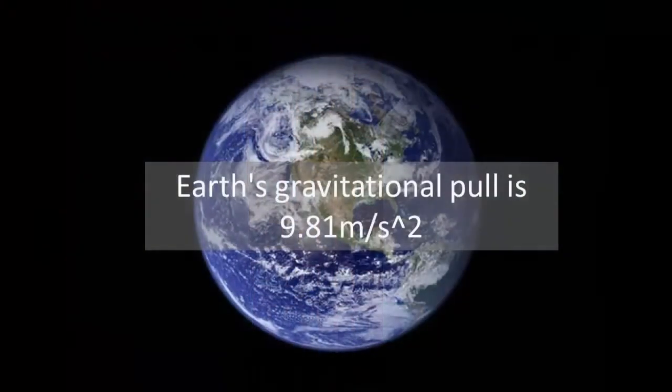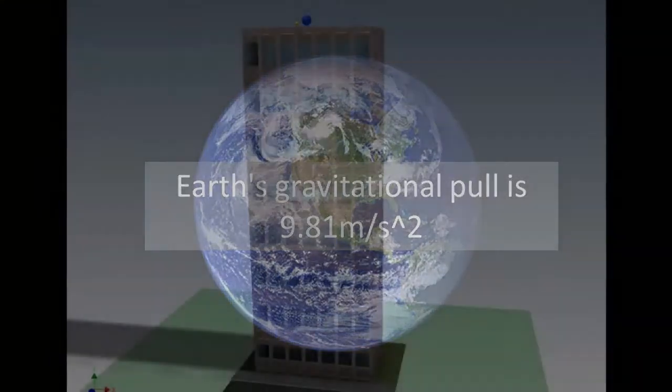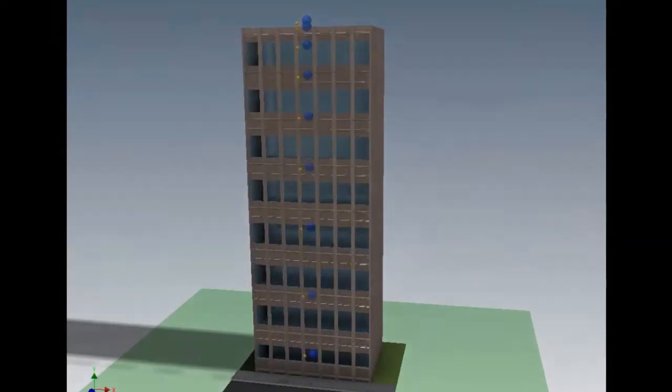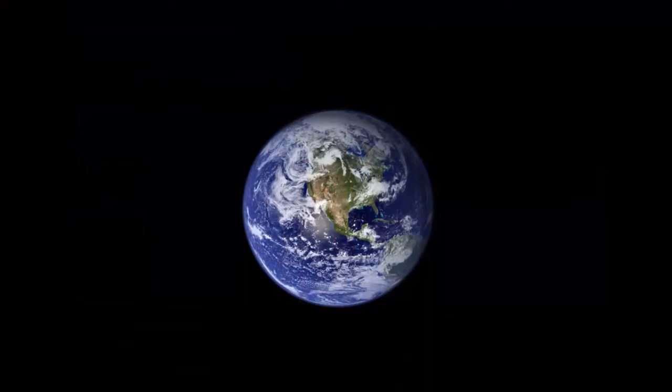This acceleration can be measured, and it is constant on Earth at about 9.8 meters per second squared. Or, the velocity of an object increases at about 9.8 meters per second every second. It does this because the Earth is pulling on the object by means of gravity.